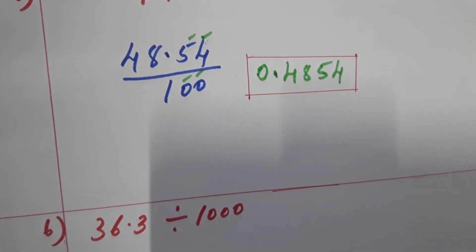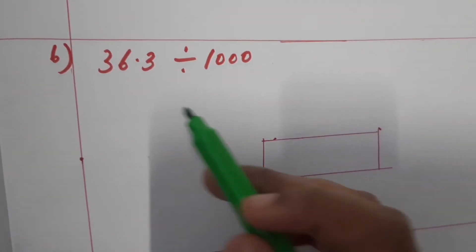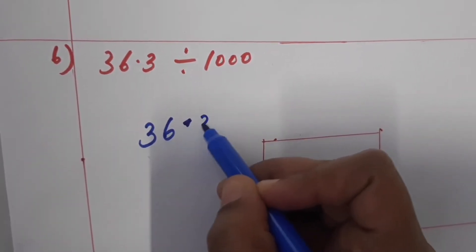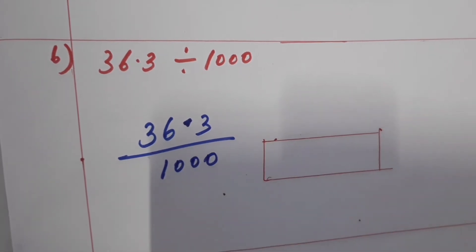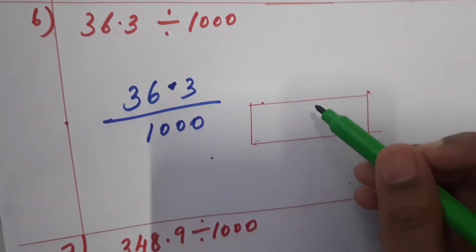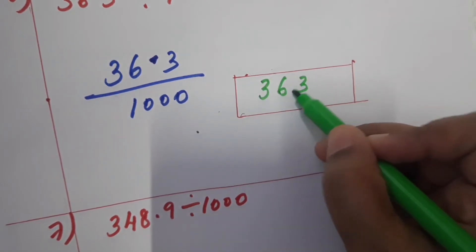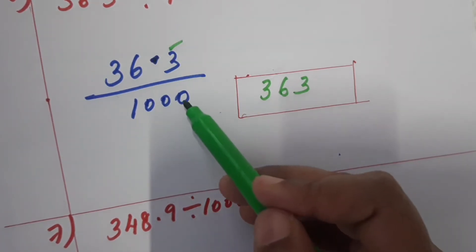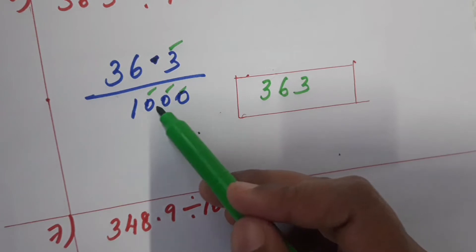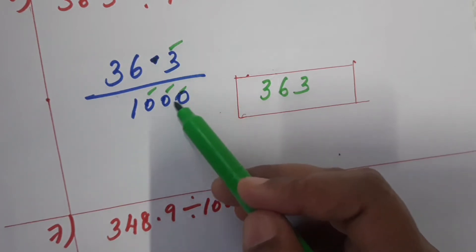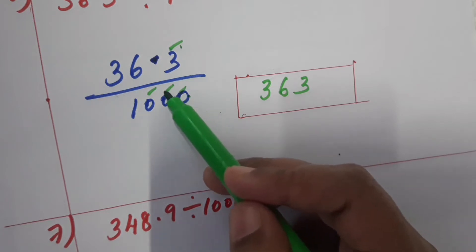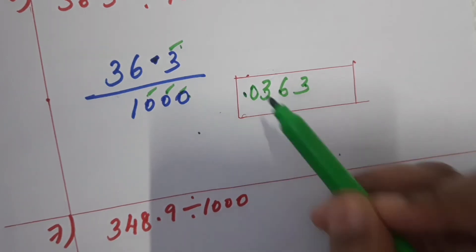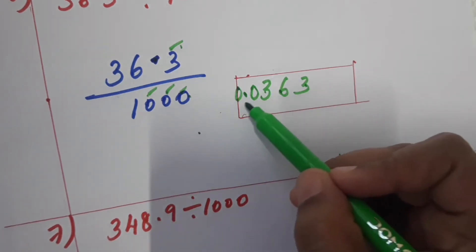Now the sixth question: 36.3 divided by 1000. Write the question as 36.3 by 1000. Write the number as 363. After the decimal point there is one digit, and there are three zeros in the denominator — total four digits. Count one, two, three, four from the right, place the decimal point and add a leading zero. The answer is 0.0363.